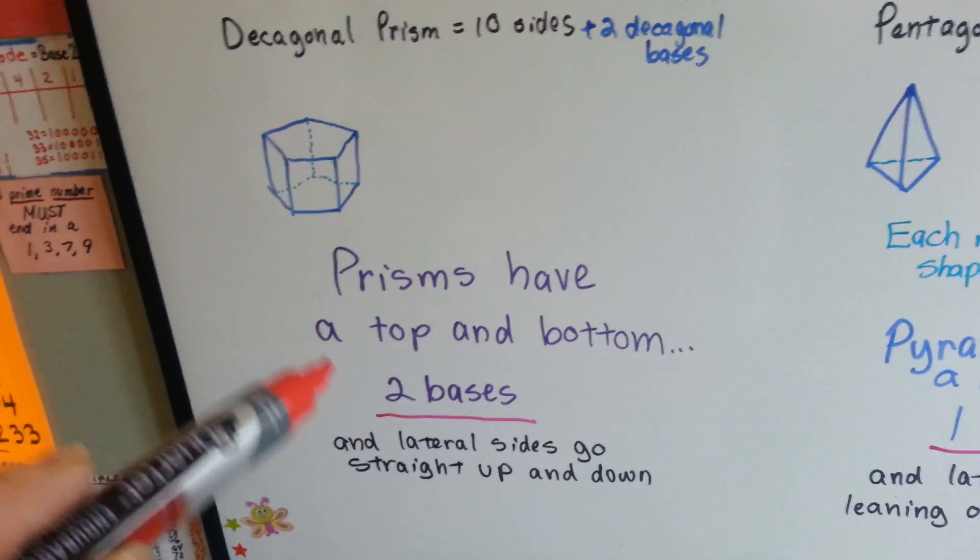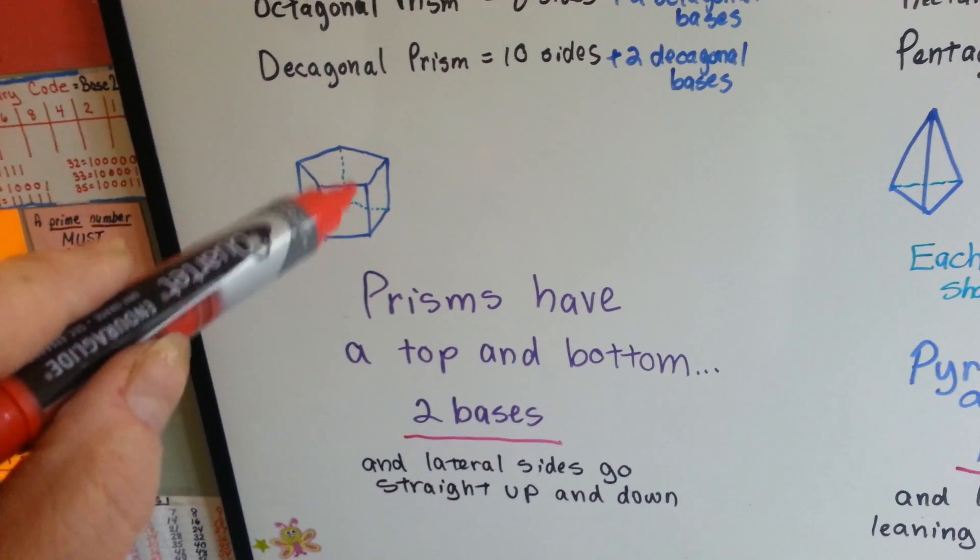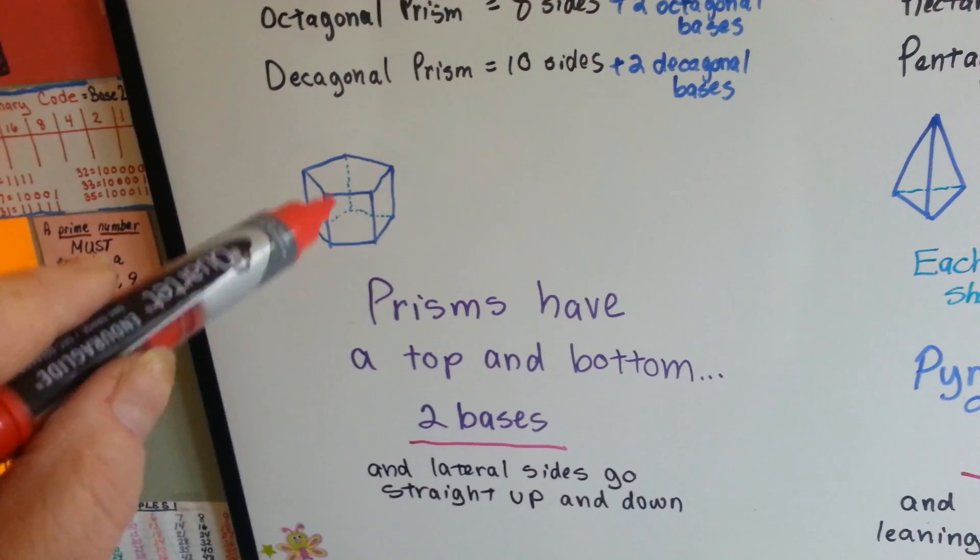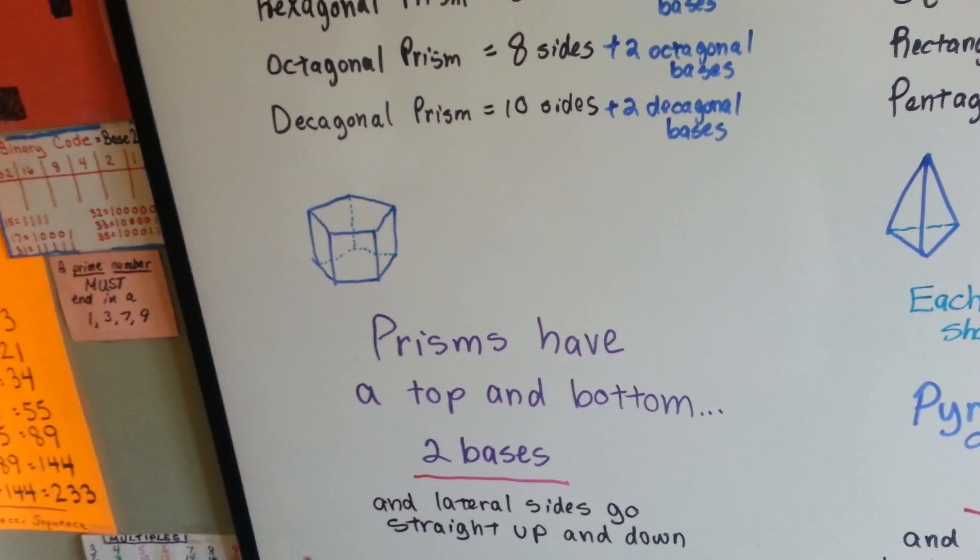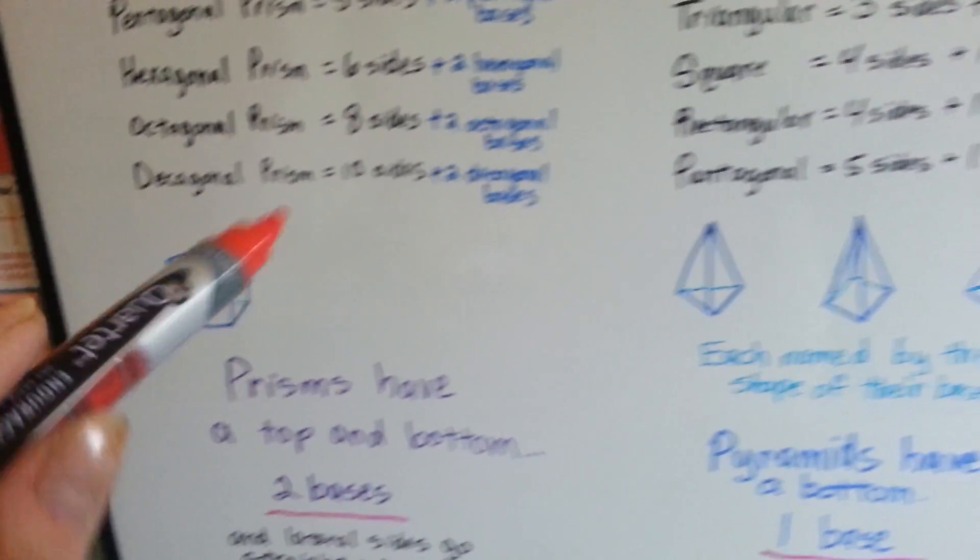So prisms have a top and a bottom. They have two bases. And their lateral sides that are all rectangles, they all go straight up and down. But that's different with a pyramid.